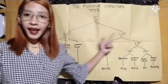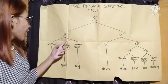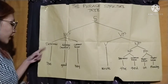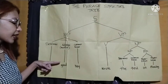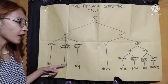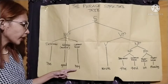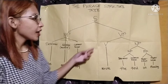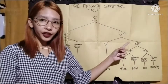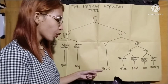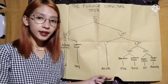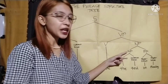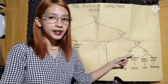This sentence has a noun phrase and a verb phrase. The noun phrase consists of the determiner 'the,' the adjective 'good' acting as a modifier to the common noun 'boy.' The verb phrase consists of the verb 'wrote' in past tense, followed by another noun phrase and a prepositional phrase.